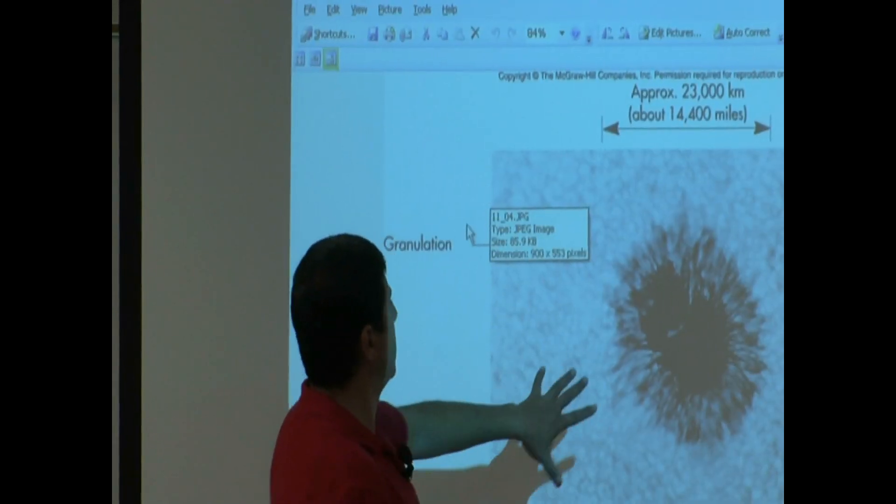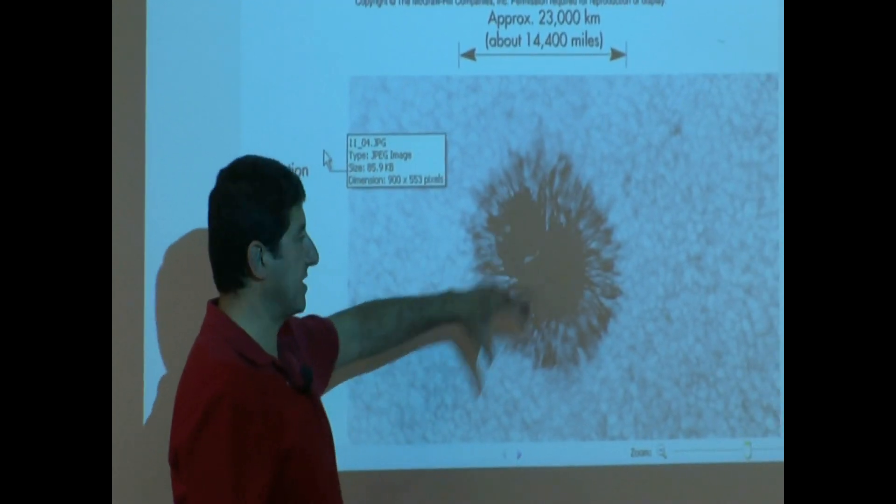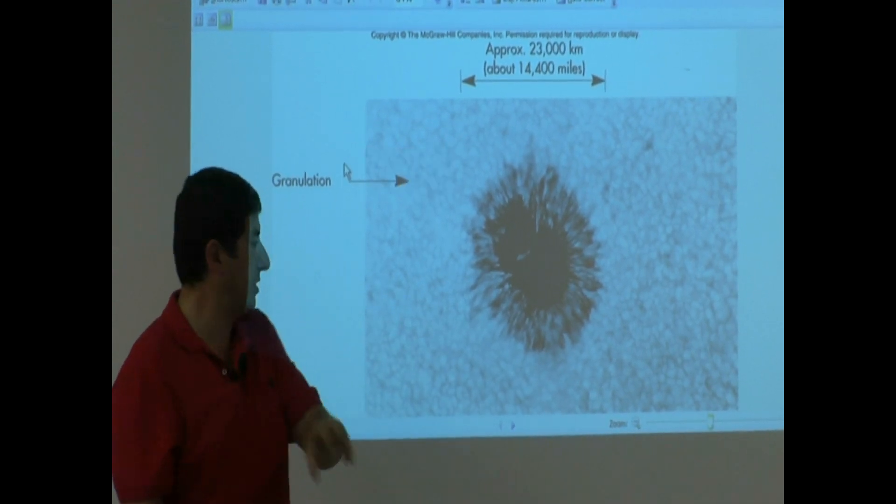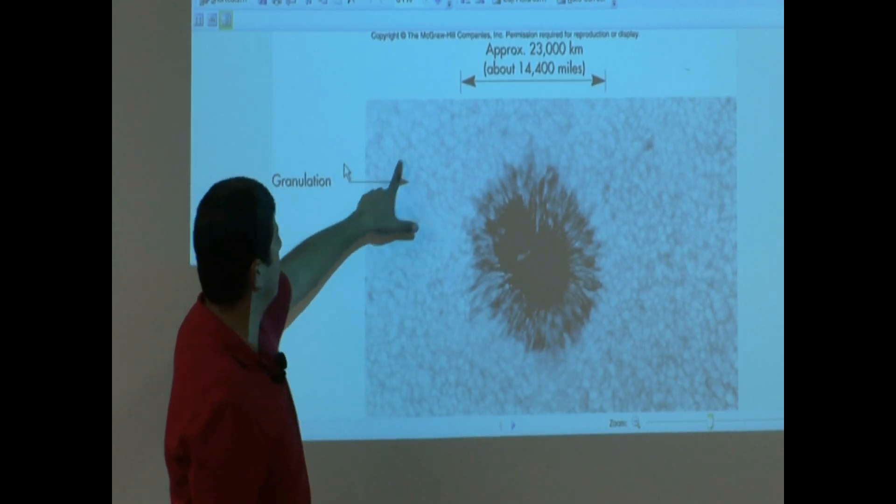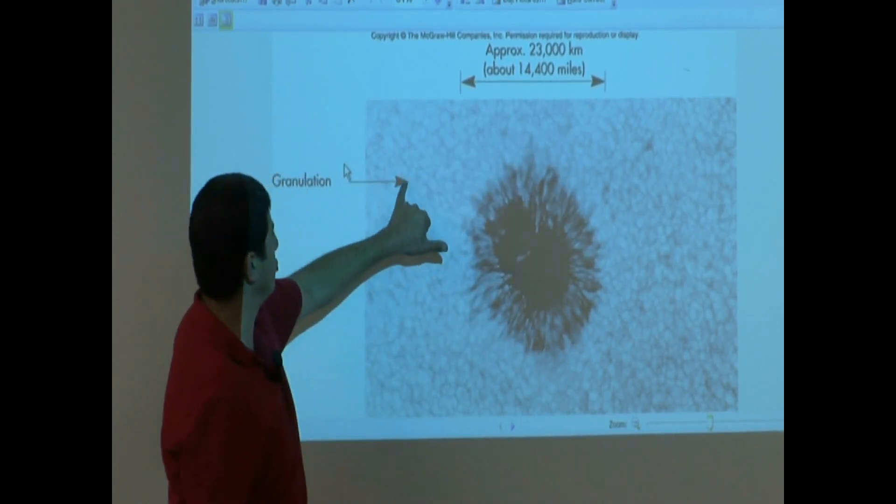This is what a sunspot will look like if you do a close-up. Huge. It's about twice the size of the Earth. And then we'll talk about what this is later on. This is called granulation.